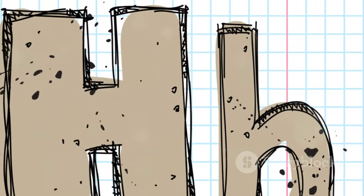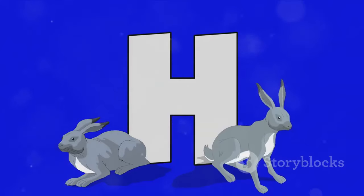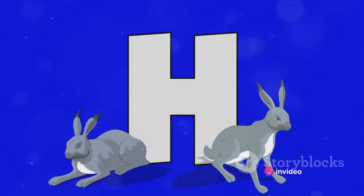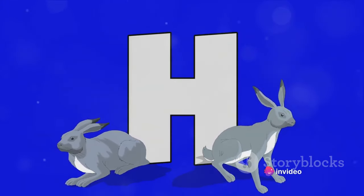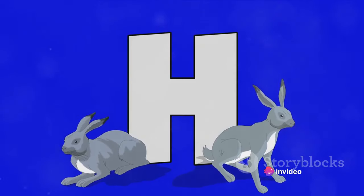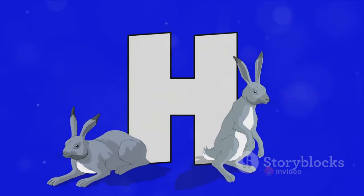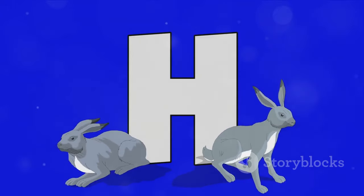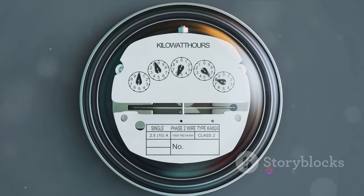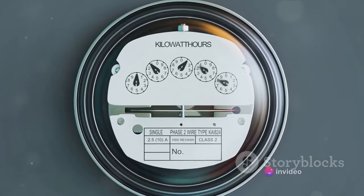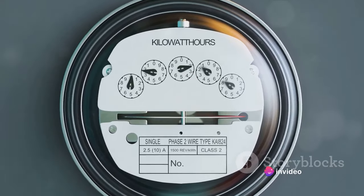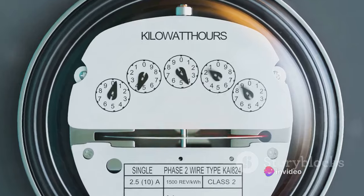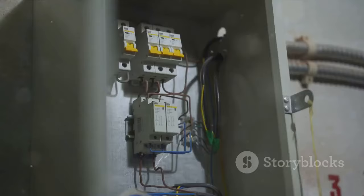But how do we quantify inductance? Just as we measure distance in meters or weight in kilograms, we measure inductance in a unit called Henry, often abbreviated as H, named after the American scientist Joseph Henry, who discovered inductance independently. One Henry is the amount of inductance required to induce 1 volt of electromotive force when the current is changing at the rate of 1 ampere per second.